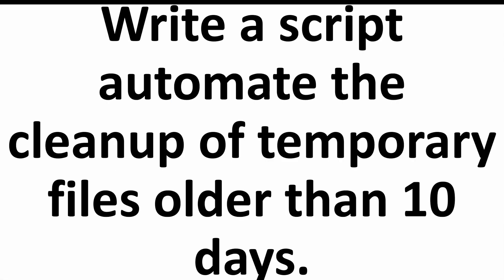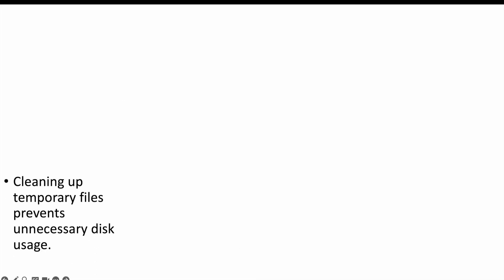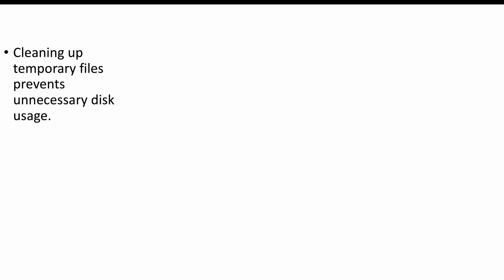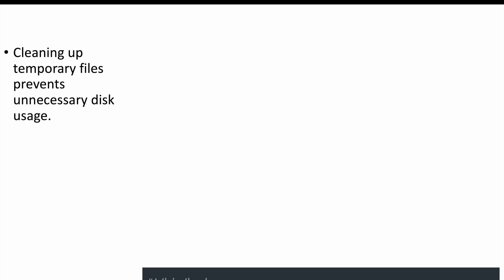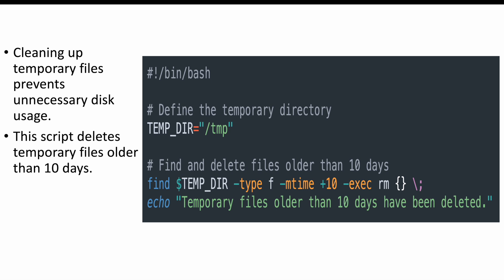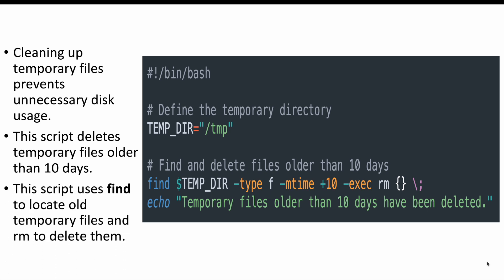The next question is: write a script to automate the cleanup of temporary files older than 10 days. Generally we work with temporary files available during runtime, and cleaning them up prevents unnecessary disk usage. This script deletes any temporary files older than 10 days. We use the find command, giving the directory where temporary files are available, find any files older than 10 days, delete them, and print a message confirming the files have been deleted.